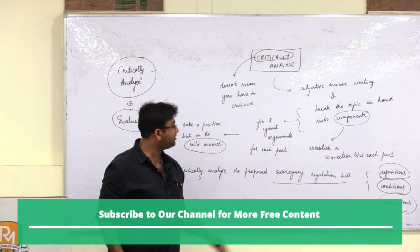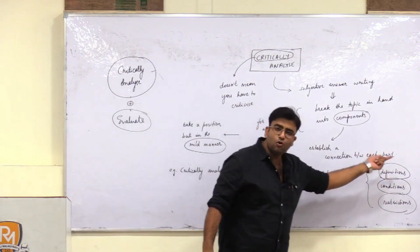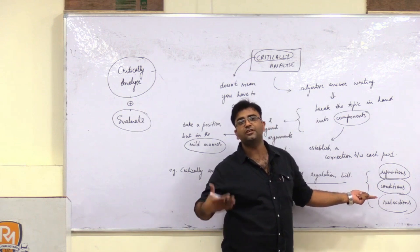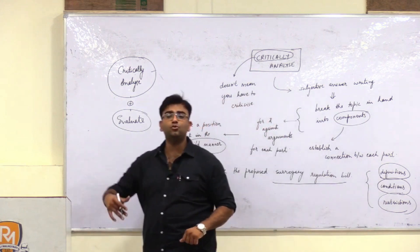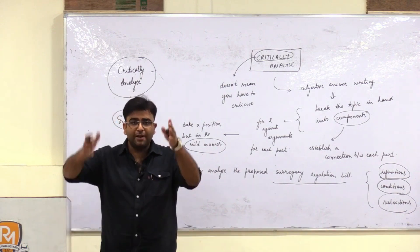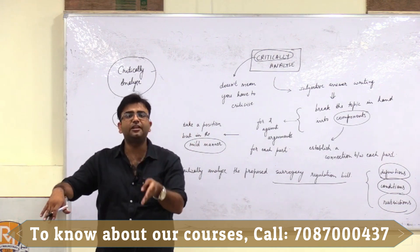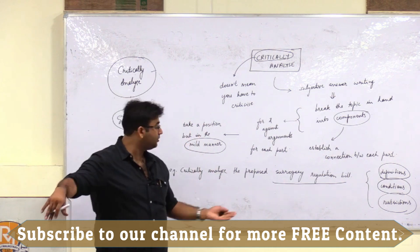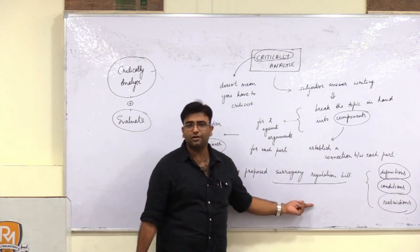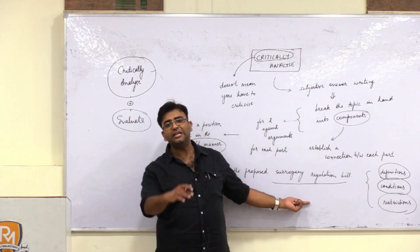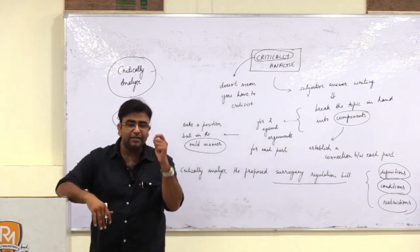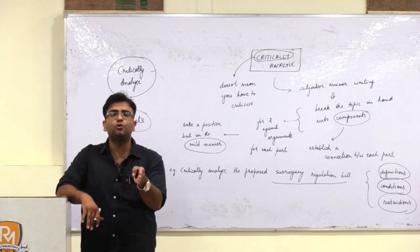Now you have to provide for and against arguments on each part — whether you support the definition or you don't support the definition, whether the prescribed conditions for surrogacy are good or not justified, and whether you support the restrictions imposed on surrogacy or not, and why. So what you are doing is breaking a large topic into components and doing a critical analysis — for and against arguments — for each component. In the conclusion, either you will support the surrogacy regulation bill or you will oppose it, but in a very mild manner. If you support the bill, say it is a good piece of legislation. However, there are many negative consequences that may come up which need to be prevented. So this is what is basically meant by taking a conclusion or taking a position while concluding, but in a very mild manner.